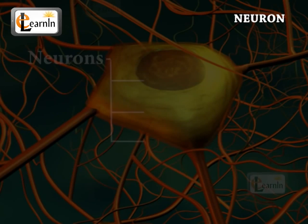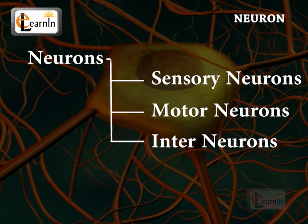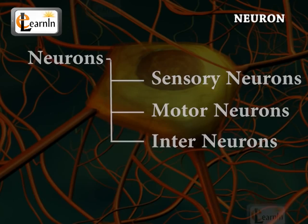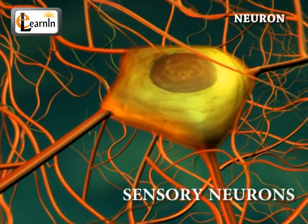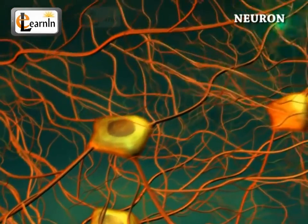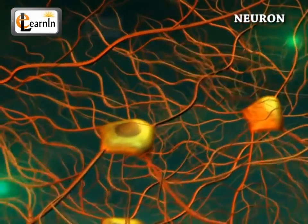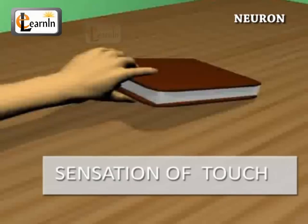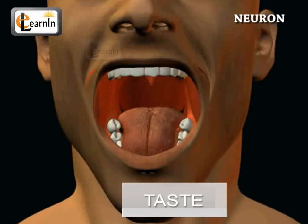Neurons can be categorized into three types: sensory neurons, motor neurons, and interneurons. Sensory neurons allow us to receive information from the outside world through our senses. The sensory neurons evoke the sensation of touch, pain, vision, hearing, and taste.